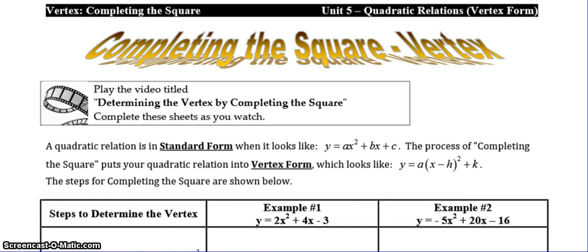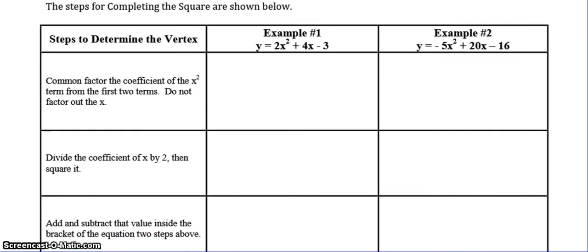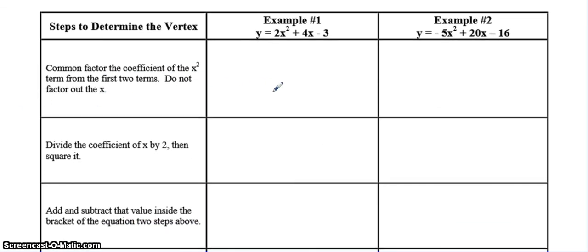Today you're going to be learning a new method of finding the vertex when your parabola is in standard form. This method is called completing the square, and it takes your equation from standard form and puts it into vertex form so that you can pick out the vertex as your h and k values. This is the most common way of determining the vertex, so please make sure you pay attention and remember that this process is called completing the square.